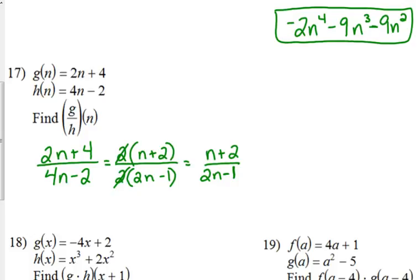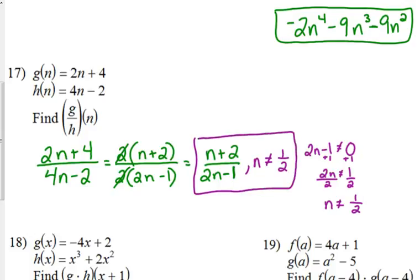And you may run into a problem that says state any excluded values. We have to exclude a number here because we have a denominator. The denominator can't equal what? What number can we not divide by? Zero. The denominator cannot equal zero. So when we get to the end, 2n minus 1 cannot equal zero. Solve for n. n cannot equal 1 half. That's the excluded value. So that may be part of a problem somewhere down the road. Division really is the easiest one. You just put function over function. If you can factor and simplify, factor and simplify. Otherwise, that's all you have to do. And then find the excluded value.